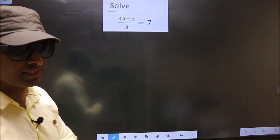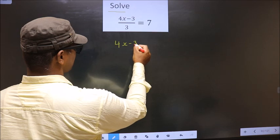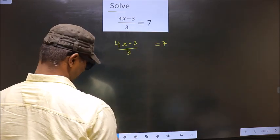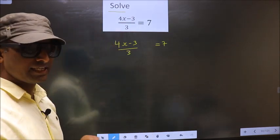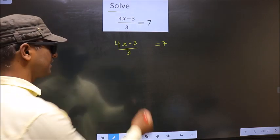First, the given equation is 4x minus 3 by 3 equal to 7. To solve this equation, we should get rid of the denominator, that is 3.